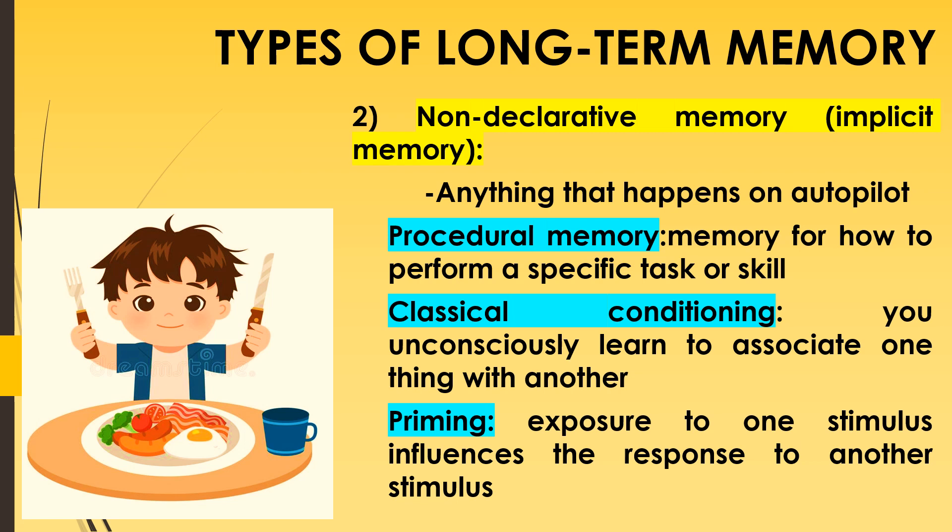The third type is priming — a phenomenon in which exposure to one stimulus influences the response to another stimulus. For example, seeing the word 'yellow' and then identifying the word 'banana' more quickly than other words. It is the process by which a past experience increases the accuracy or quickness of a response — for example, seeing a supporter of a rival sports team and feeling competitive, or being more likely to think of the word 'library' after seeing the word 'book.'